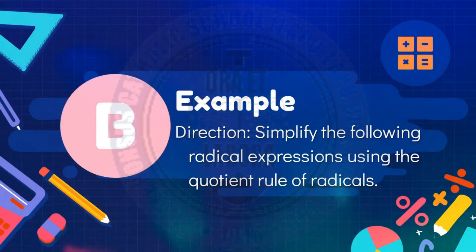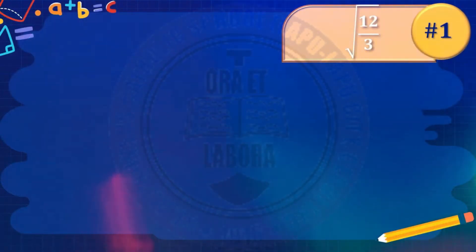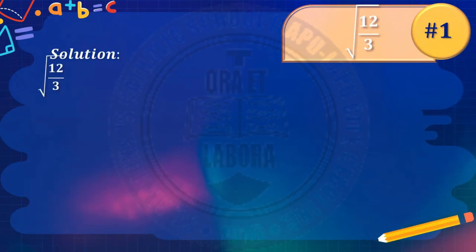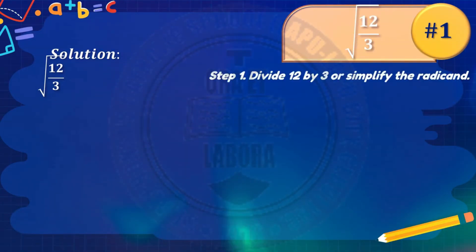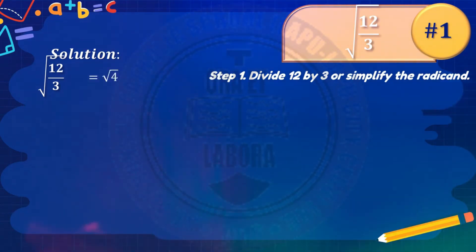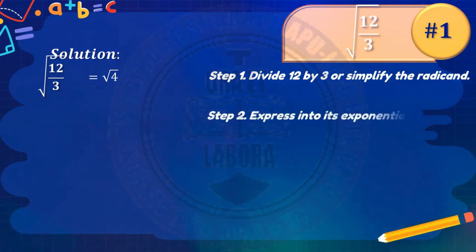Let's apply the quotient rule of radicals as we simplify the following radical expressions. Number 1: the square root of 12 over 3. Since we can simplify the radicand, divide 12 by 3 to get 4, so the expression becomes the square root of 4. Step 2: express square root of 4 into its exponential form — that is 4 raised to 1 half.